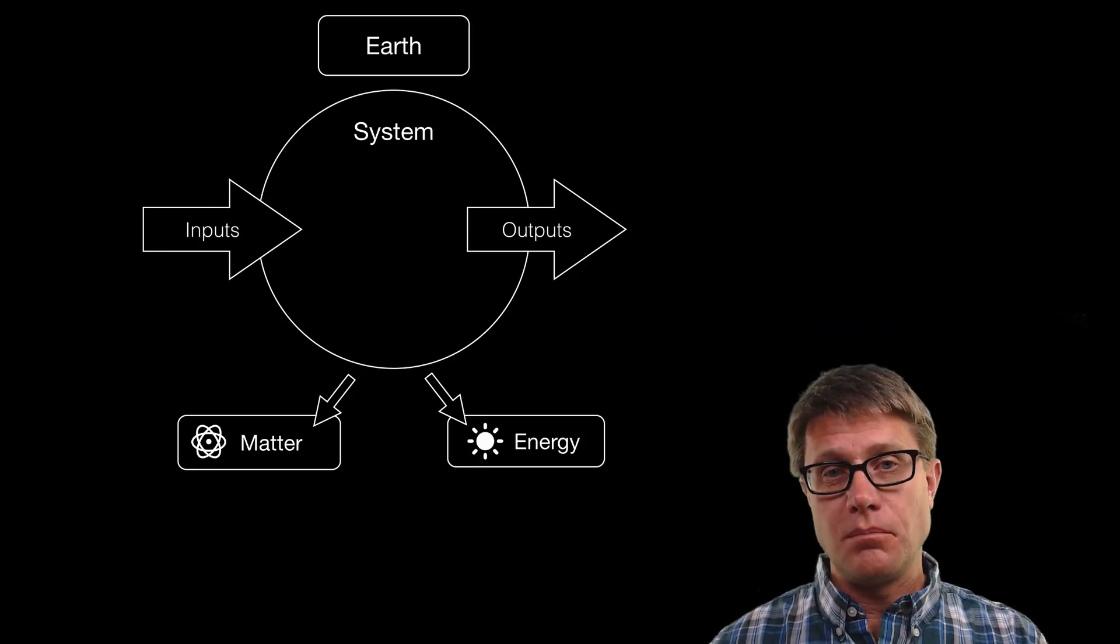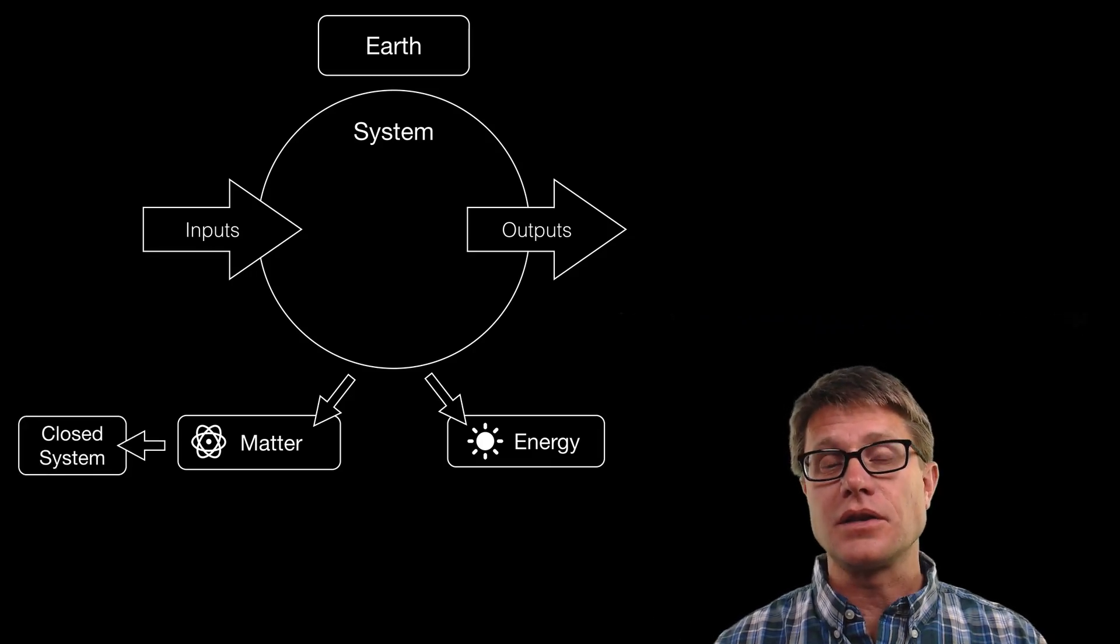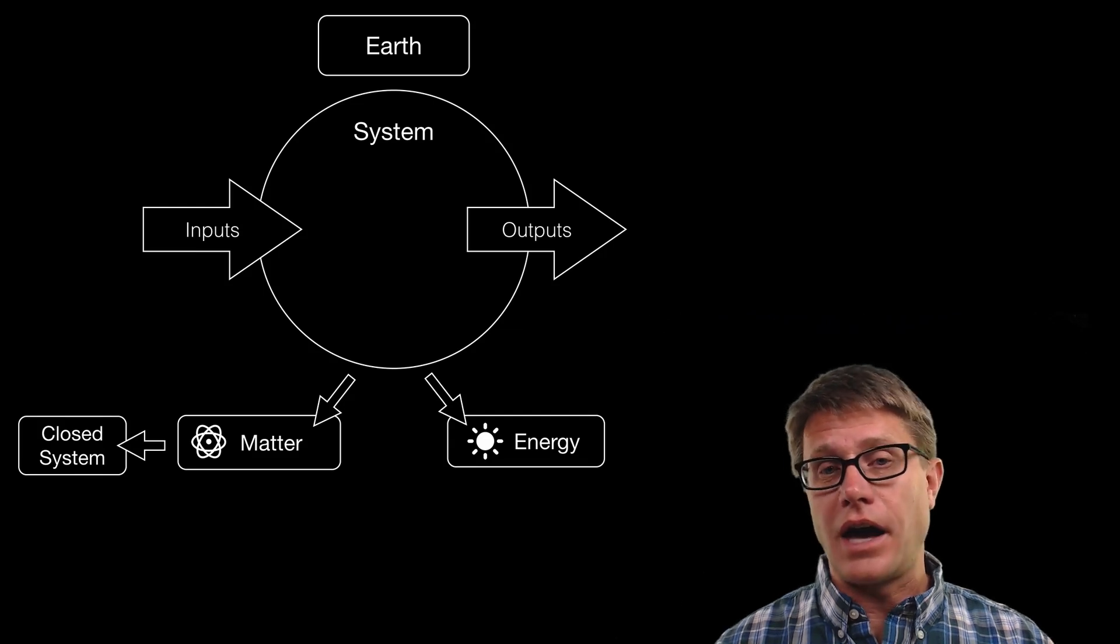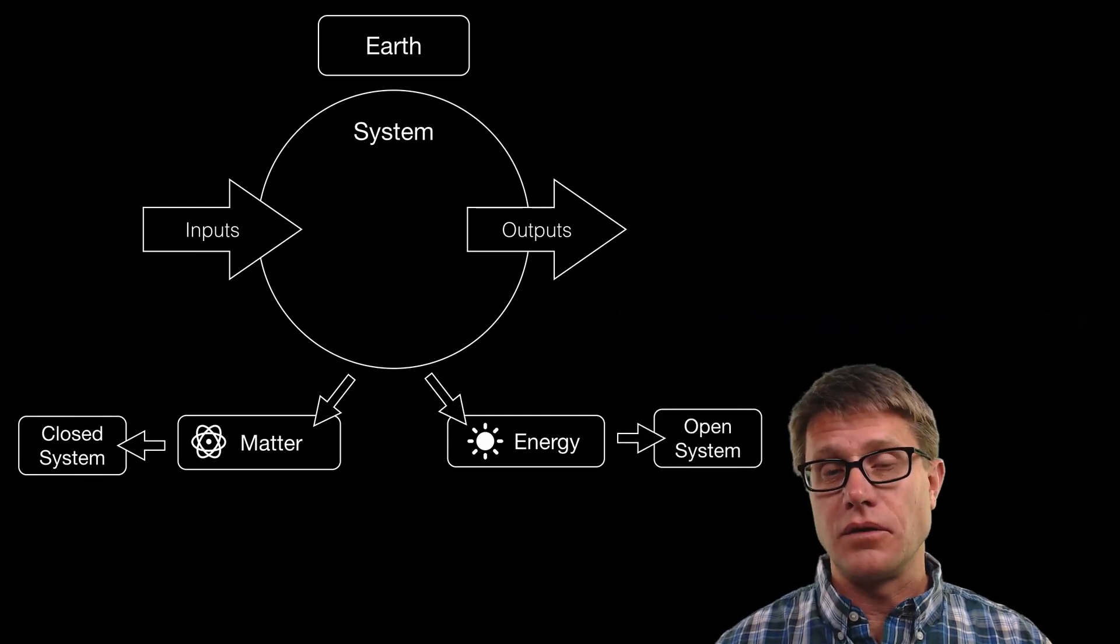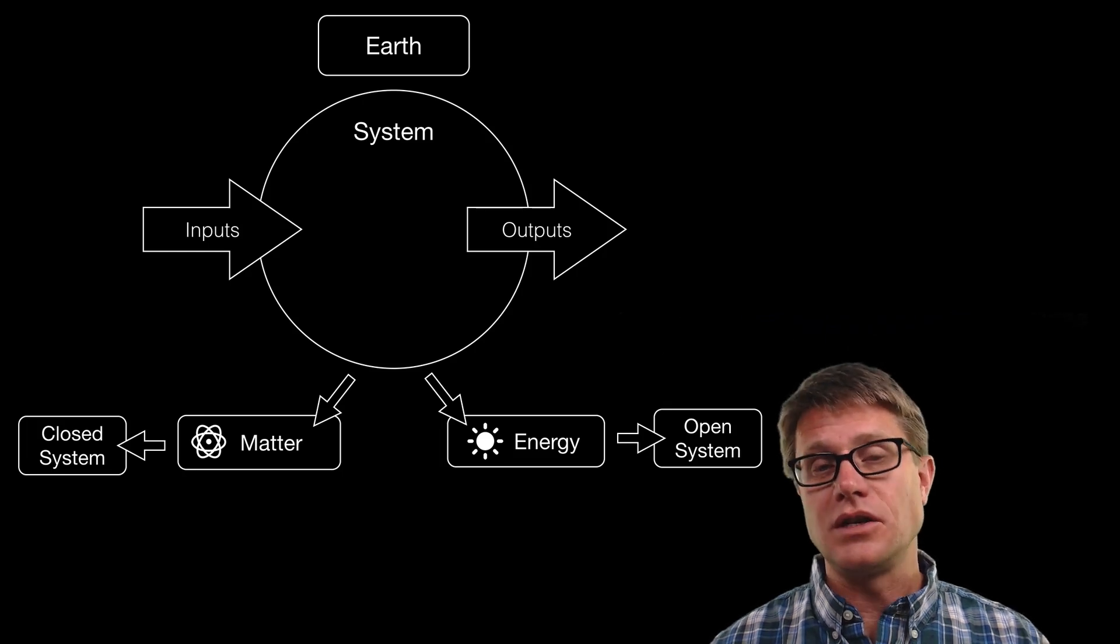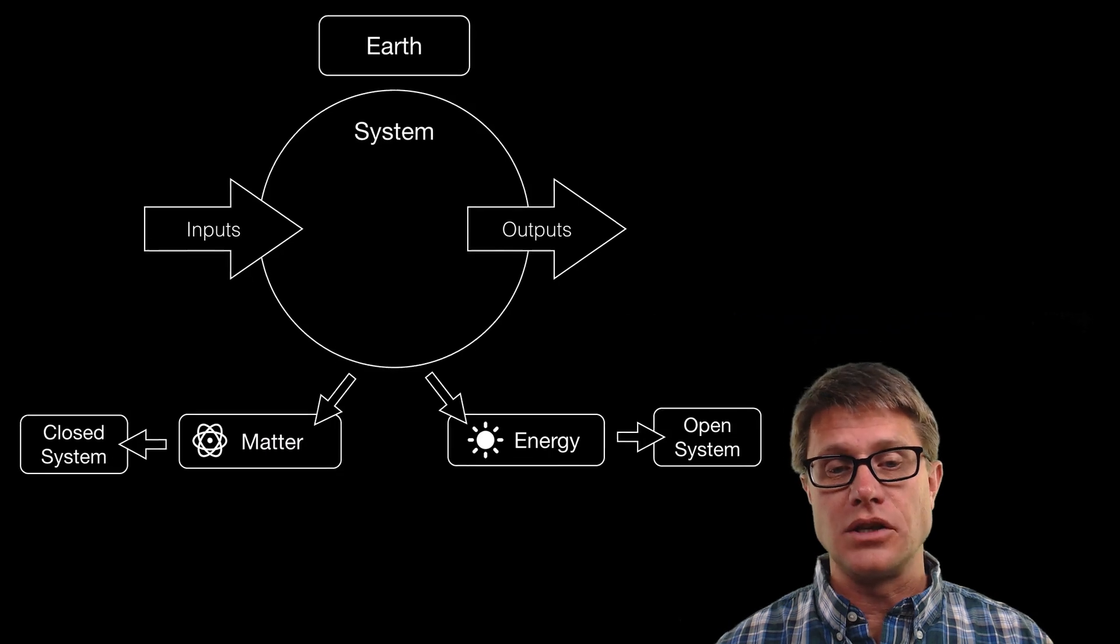If we look at the matter on our planet it is actually a closed system. The amount of matter we have on our planet is conserved. We do not get new matter from space so we are stuck with the atoms that we have. If we look at the energy however it is more of an open system. We continue to get energy coming from the sun and we lose that energy as heat.